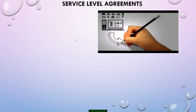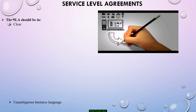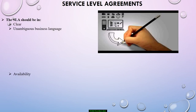An SLA is an agreement between an IT service provider and a customer. The SLA describes the IT service, documents service level targets, and specifies the responsibilities of the IT service provider and the customer. The SLA is the main agreement — without it, the customer doesn't know what they're getting and the provider doesn't know what to do. The SLA should be in clear, unambiguous business language.